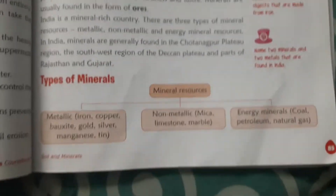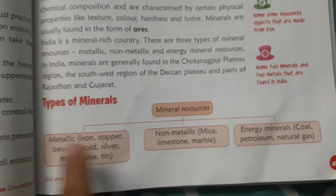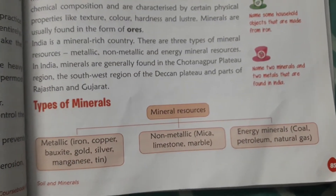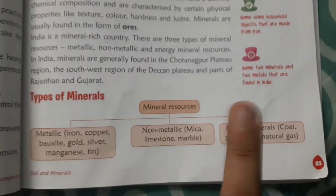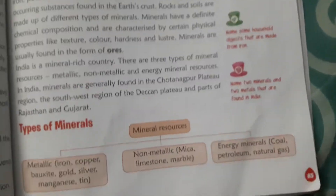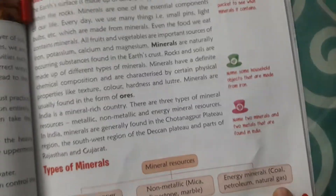Metallic minerals include iron, copper, bauxite, coal, silver, and magnesium. Non-metallic minerals include mica, limestone, and marble. Energy mineral resources include coal, petroleum, and natural gases.